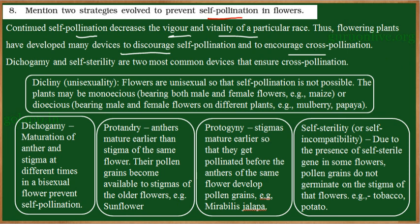Among them, the two strategies are dichogamy and self-sterility. These two are the common techniques evolved by plants to ensure that cross-pollination will occur.